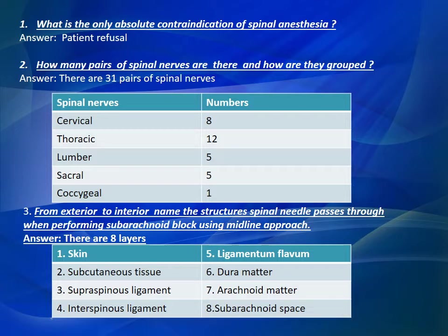Question Number 2: How many pairs of spinal nerves are there and how are they grouped? There are 31 pairs of spinal nerves: cervical – 8, thoracic – 12, lumbar – 5, sacral – 5, coccygeal – 1.